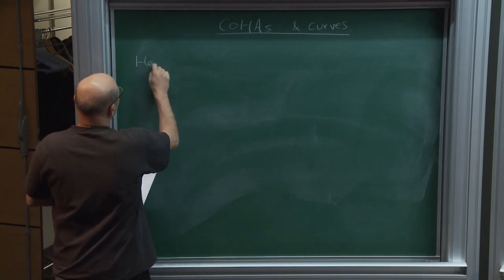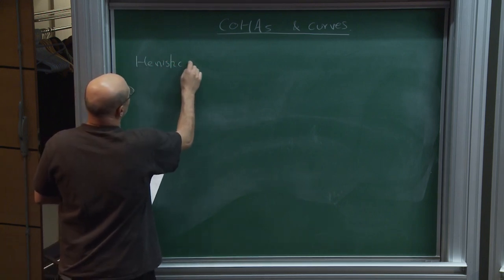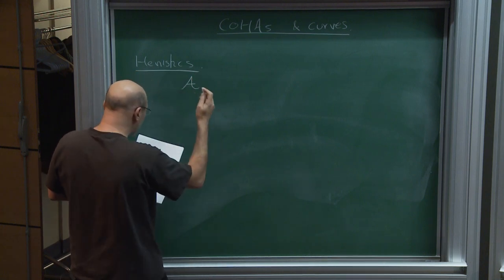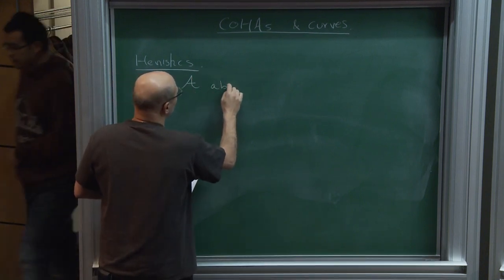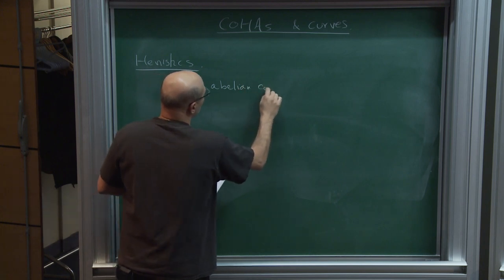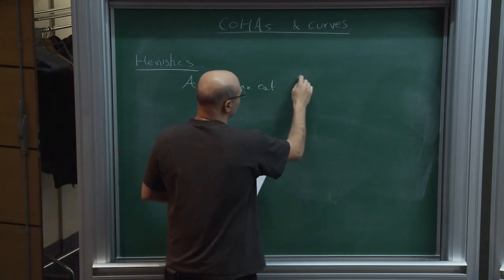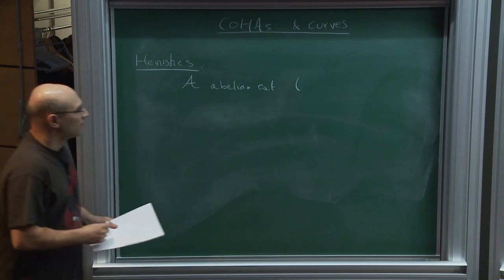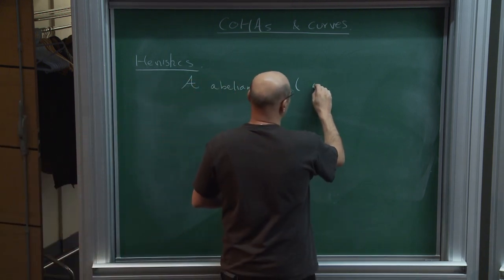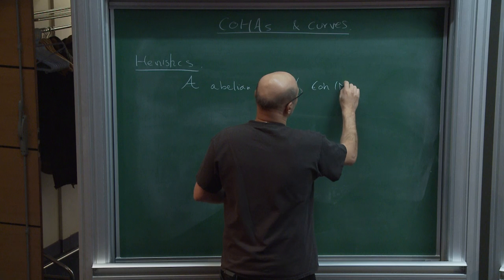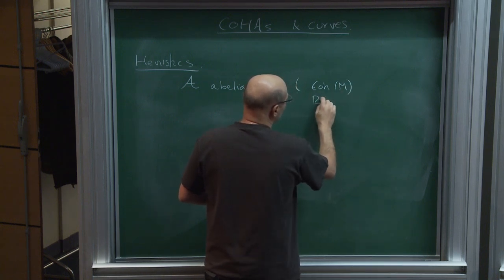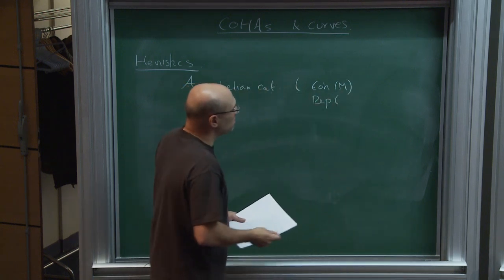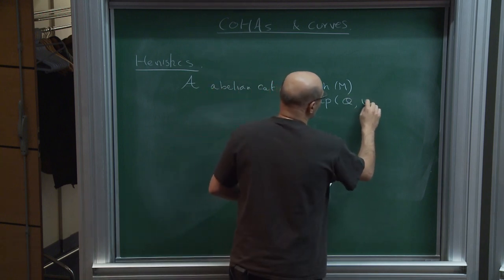Some heuristics about CoHA: you start with an abelian category, usually of small homological dimension. For instance, coherent sheaves on some manifold M, or some interesting such categories can be built out of a quiver and maybe some potential.